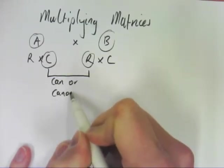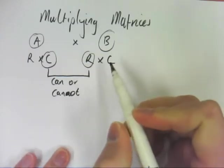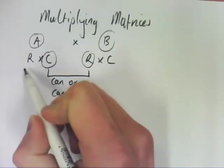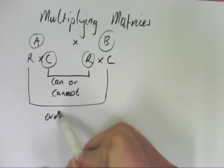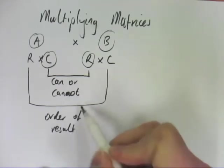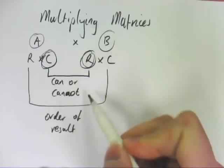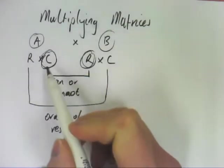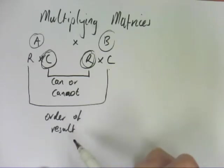If they are the same, you can do it. If they are not the same, you cannot do it. The other two give you the order of the result. So if you're able to do it, so if this value and this value are the same, then these two will give you the order of the result.